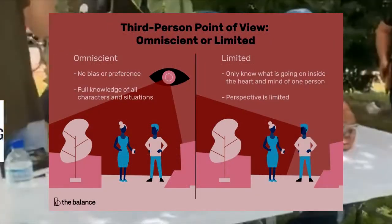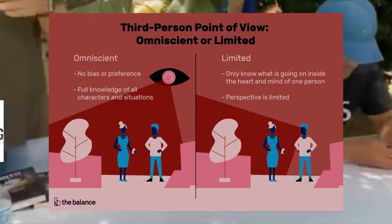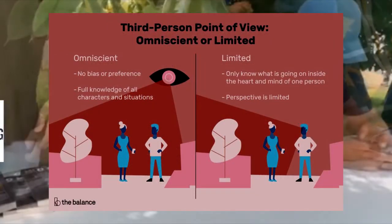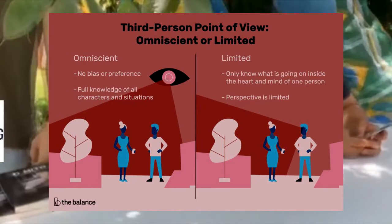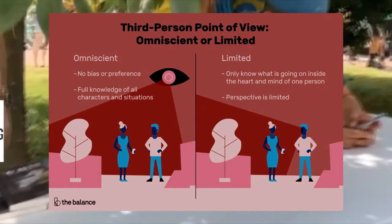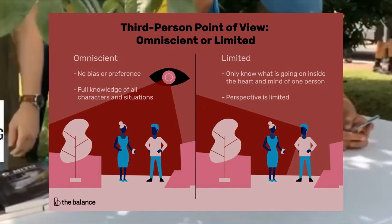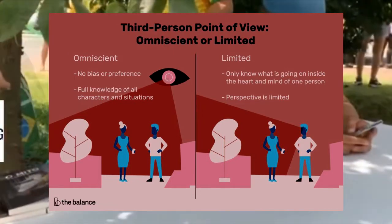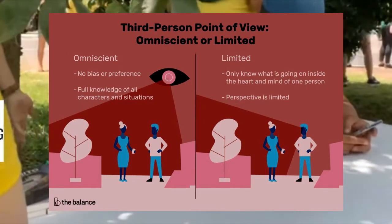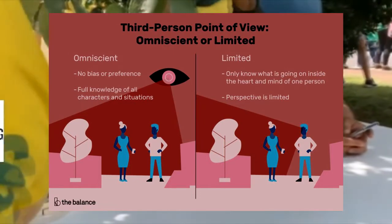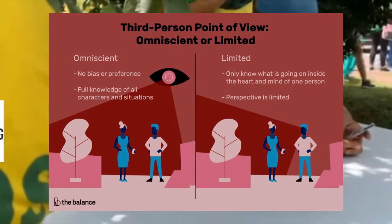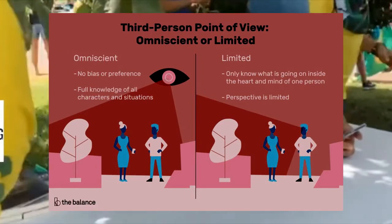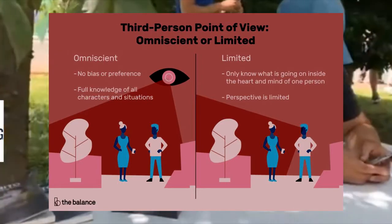In limited third person, the narrator is not part of the story — he, him, her, she, etc. Omniscient third person: the narrator knows all and sees all, told as if it's he, him, her, she, they, them.